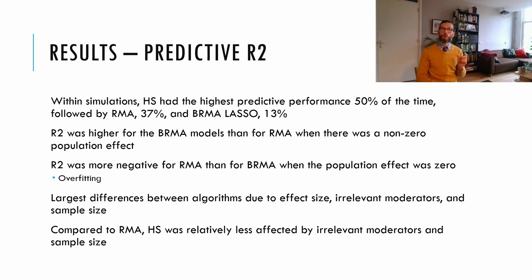Bayesian regularized meta-analysis with a horseshoe prior had the highest predictive performance 50% of the time, followed by industry standard random effects meta-analysis 37% of the time, followed by Bayesian regularized meta-analysis with a lasso prior 13% of the time. Moreover, in conditions where there was a true population effect, the predictive R-square was higher for BRMA models than for RMA models, and when the population effect was zero, so there was no effect, we found a negative R-square for the industry standard RMA method, but not for Bayesian regularized meta-analysis, which indicates that our method protects better against overfitting.